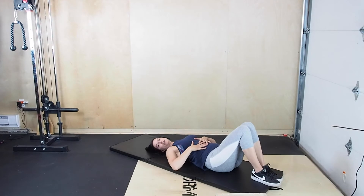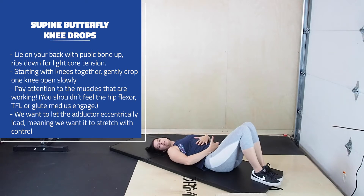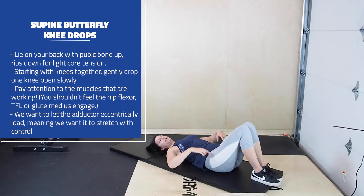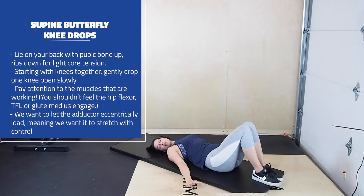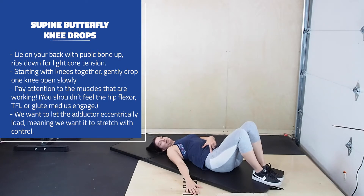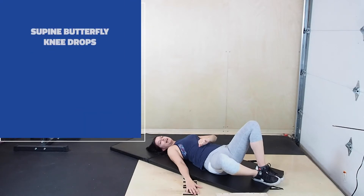We're going to lie on our back with our core turned on so that our joints are aligned. Think about having a little bit of a lift from the pubic bone for some deep core tension. Ribs are down and not flaring, but the spine is nice and lengthened. Feet are firmly planted and knees are together. Take your hands to the side for a little bit of support through the movement. Take one knee at a time and slowly open it, controlling as you drop it to the side.